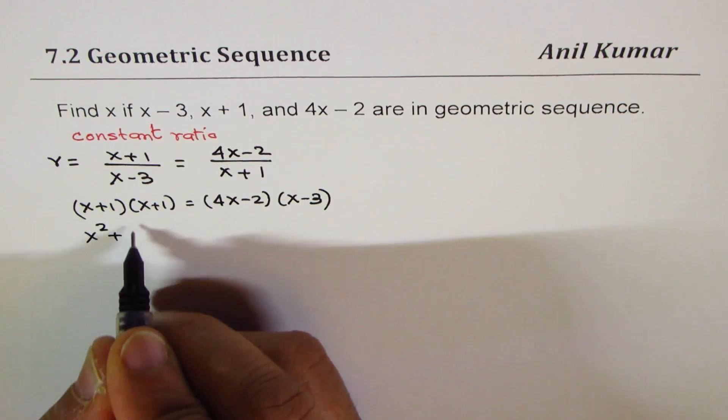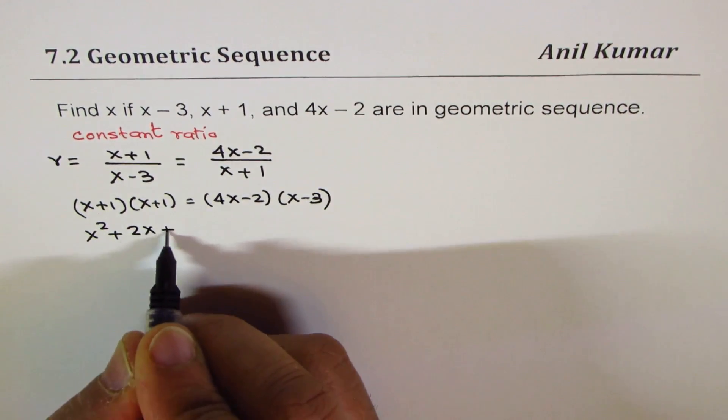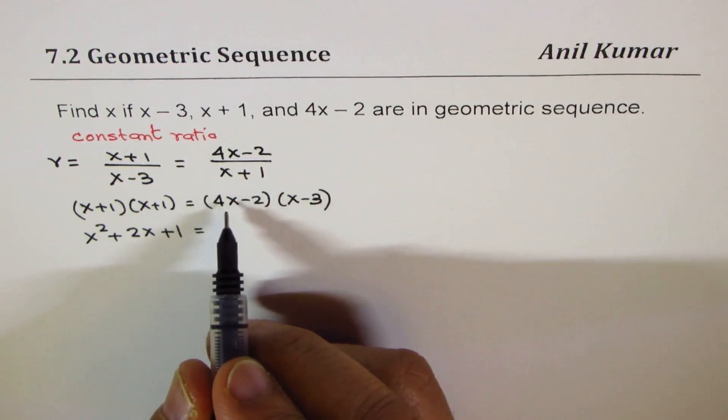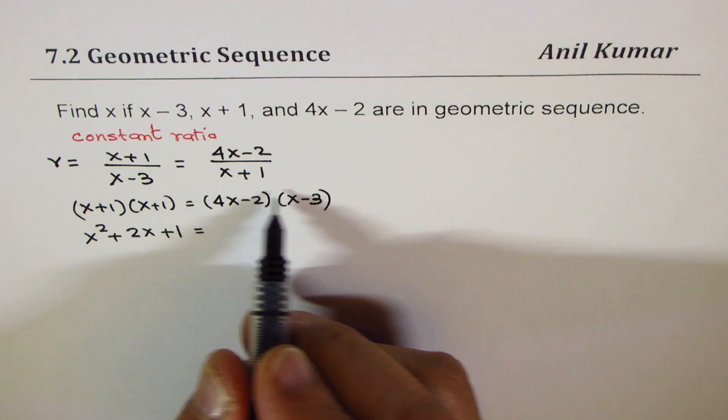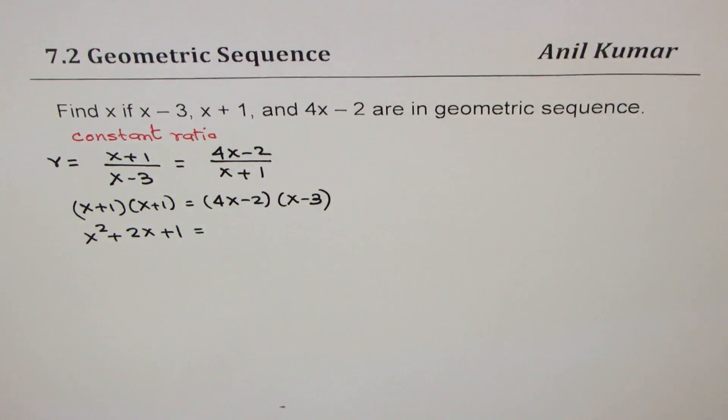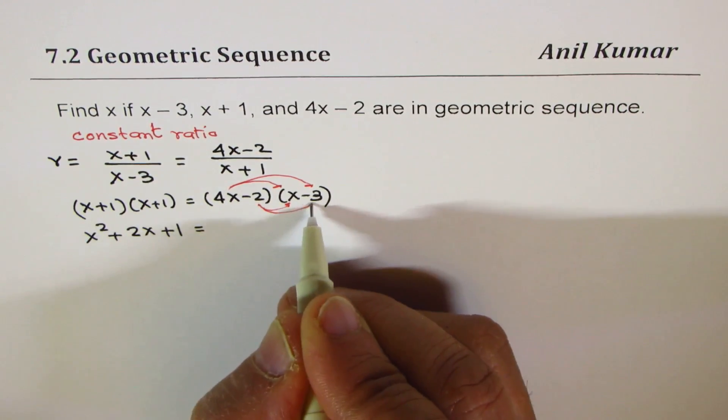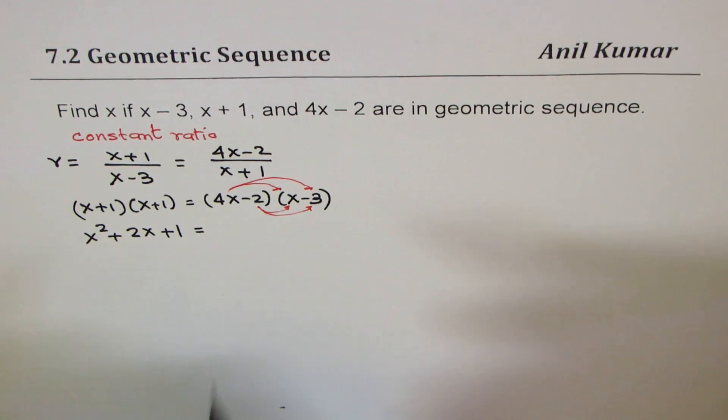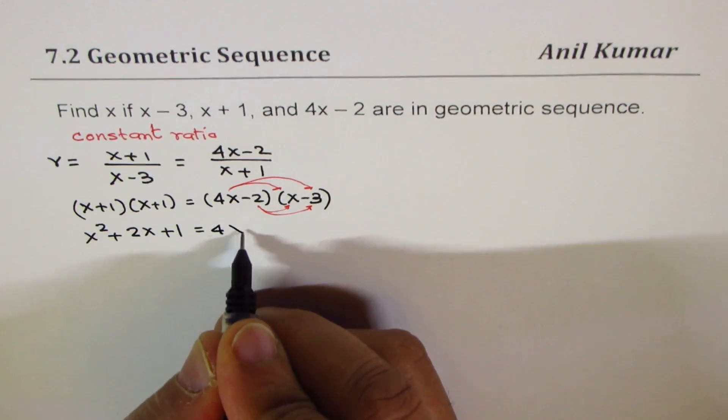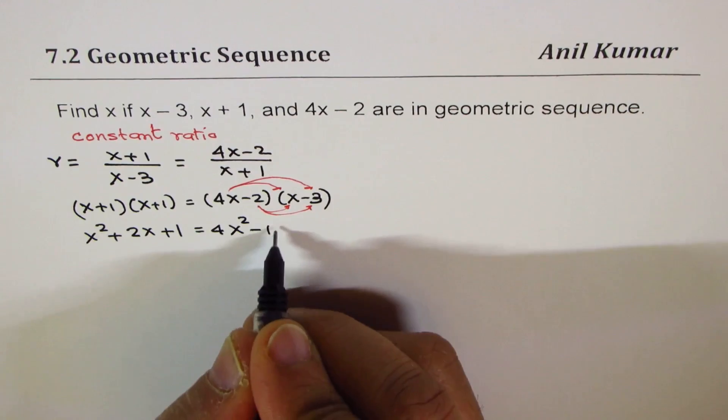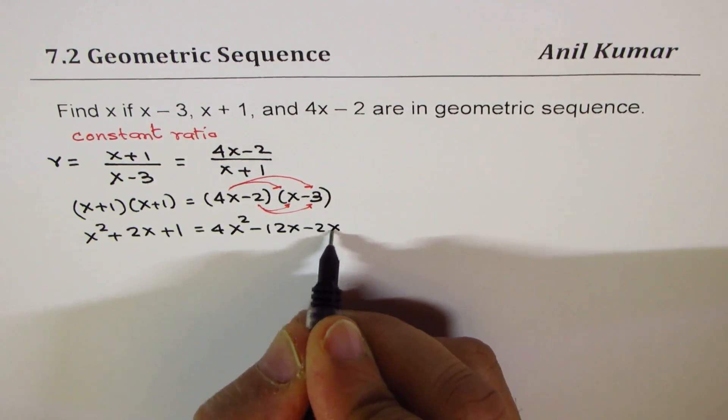You can write this as x² + 2x + 1 equals, let me multiply this side. I'll apply the distributive property: multiply both terms with 4x first and then with -2. That gives me 4x² - 12x - 2x + 6.